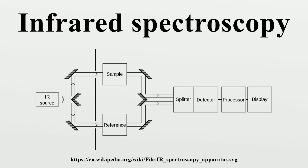Two-dimensional IR is also possible. The infrared portion of the electromagnetic spectrum is usually divided into three regions: the near, mid, and far infrared, named for their relation to the visible spectrum.